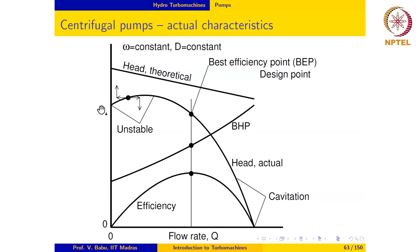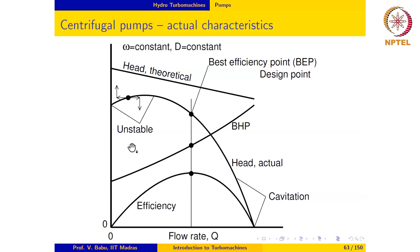The other portion of the characteristic identified for special attention is the rising portion, which has been indicated as being unstable. If we take an operating point on this rising portion, the pump is operating in a stable fashion at that point, and there is a small disturbance in the flow rate.